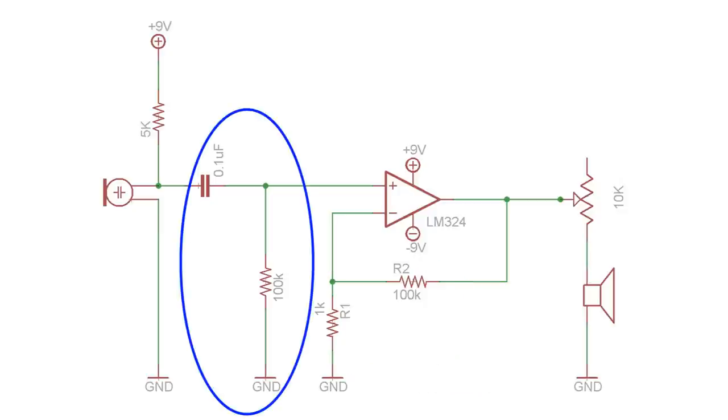Now, in between the microphone and the amplifier, I have a high-pass filter. But what would happen if I didn't have that filter?